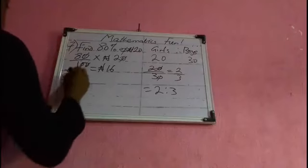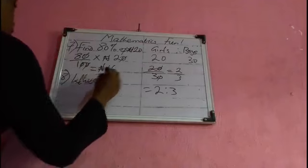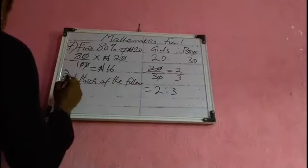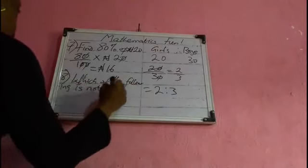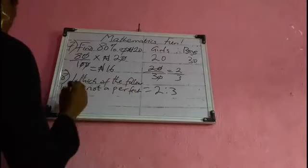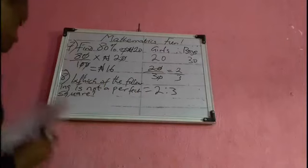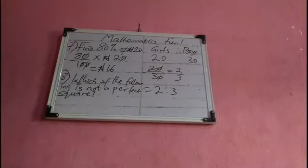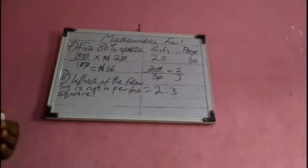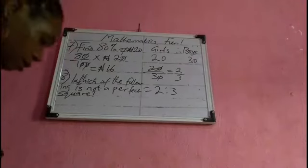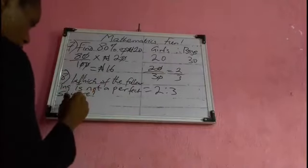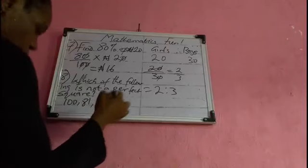Number eight: which of the following is not a perfect square? When we say perfect square, it means when you find two identical numbers that multiply together to give you that number. We have: 100, 81, 65, 49, and 36.